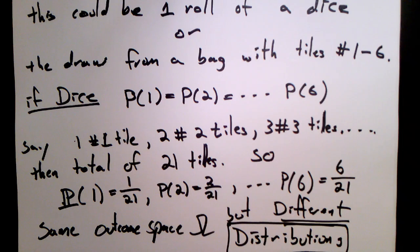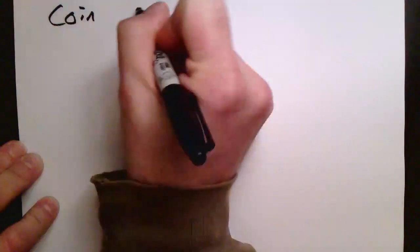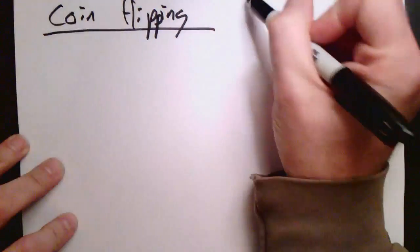Now, some distributions are important, and we give them special names. One of the most basic examples in probability theory is coin flipping. So we flip a coin, and we either get a head or a tail.